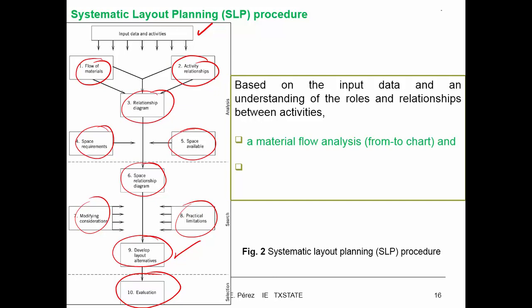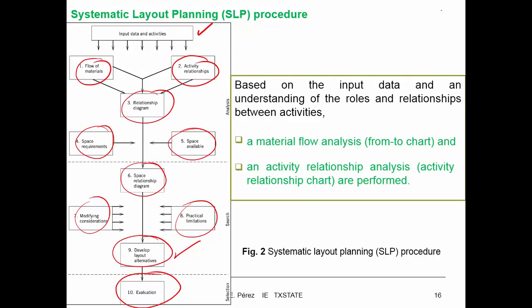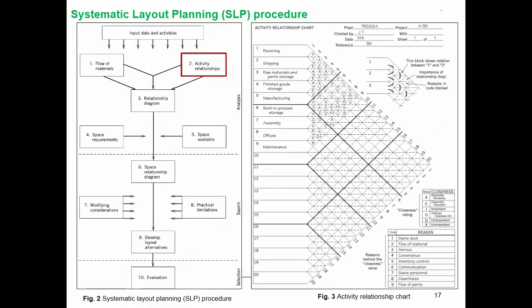Based on the input data and understanding of the roles and relationships between activities, a material flow analysis, a from-to chart, and an activity relationship analysis with an activity relationship chart are performed. These are all steps of the systematic layout planning procedure. We start with a from-to chart and also an activity relationship chart. Here I'm showing an activity relationship chart for a specific plant.